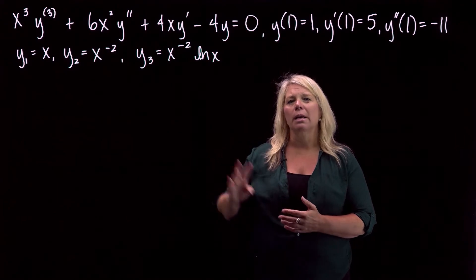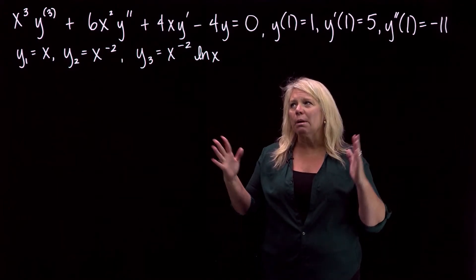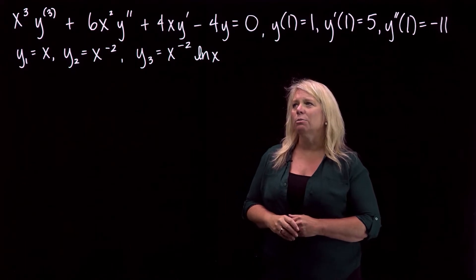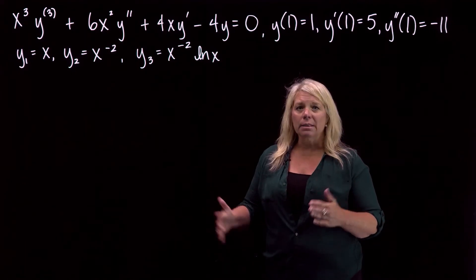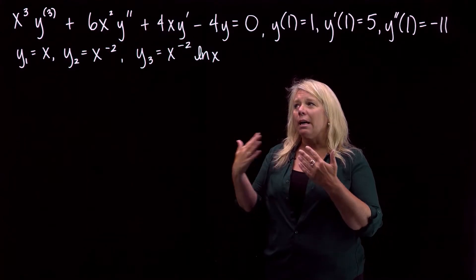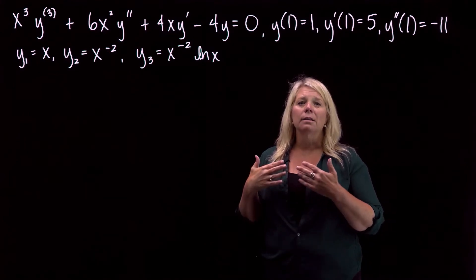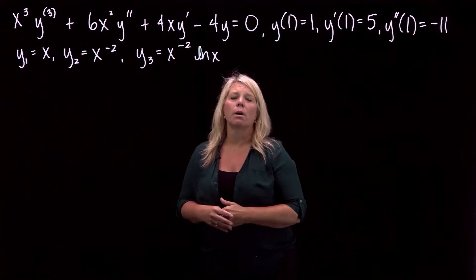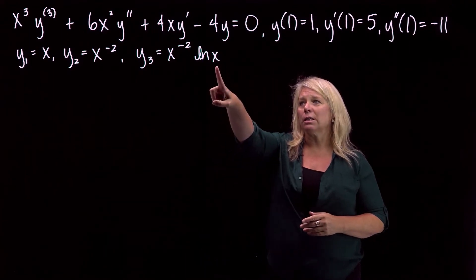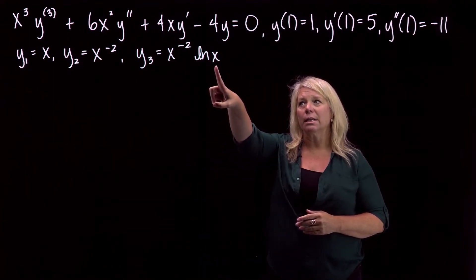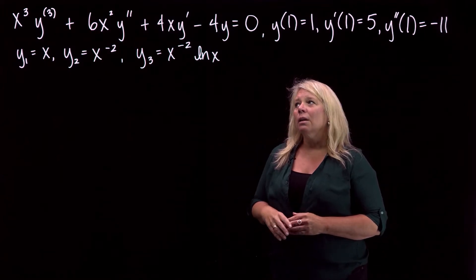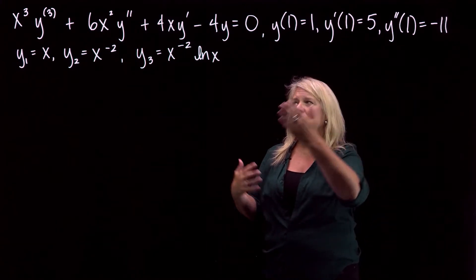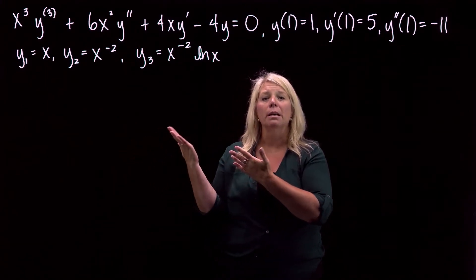The derivatives of the third function will be more complicated due to the product rule. Using the Wronskian, you'd confirm it is not the zero function on the interval where our functions are defined. Our functions are defined only for x greater than zero because of the ln of x term. So we have a third order linear differential equation, initial conditions, and three linearly independent solutions.